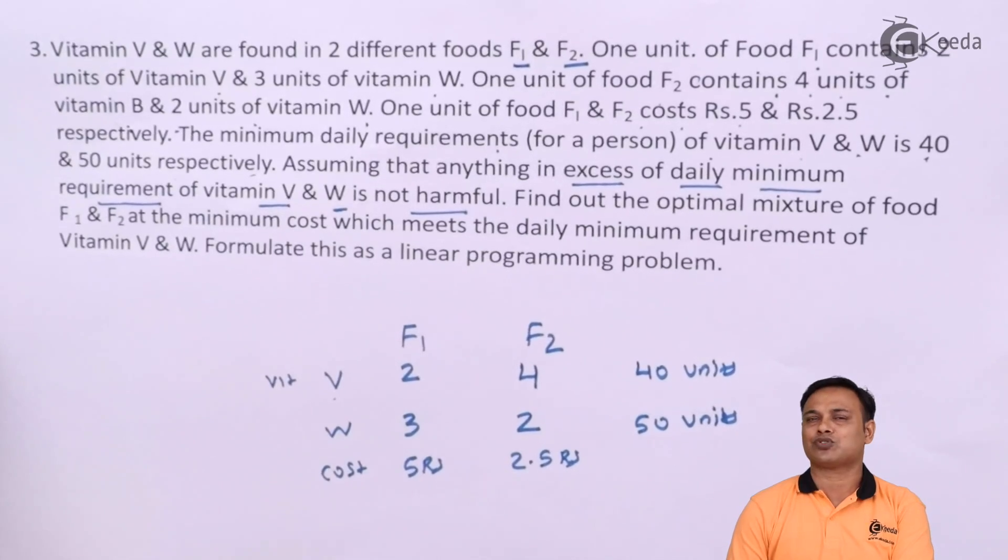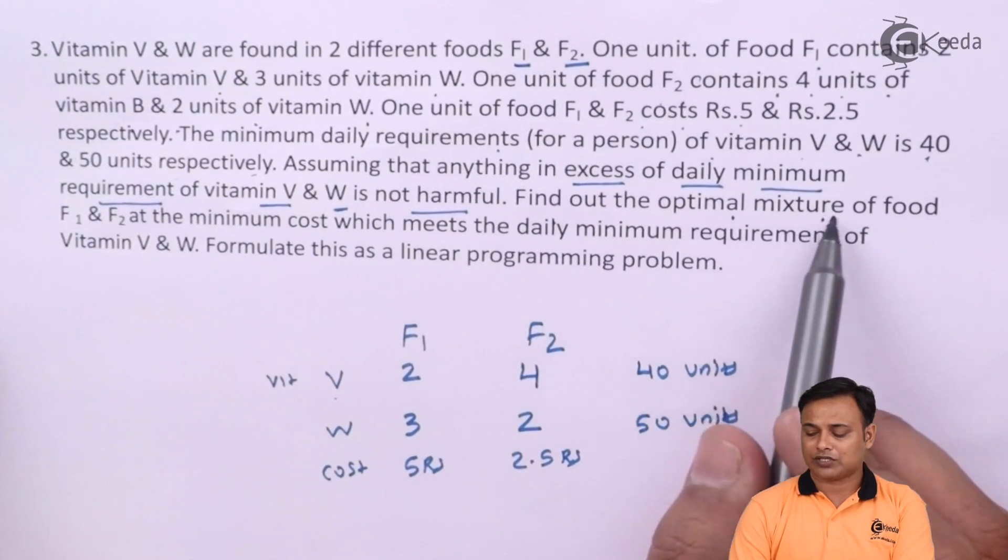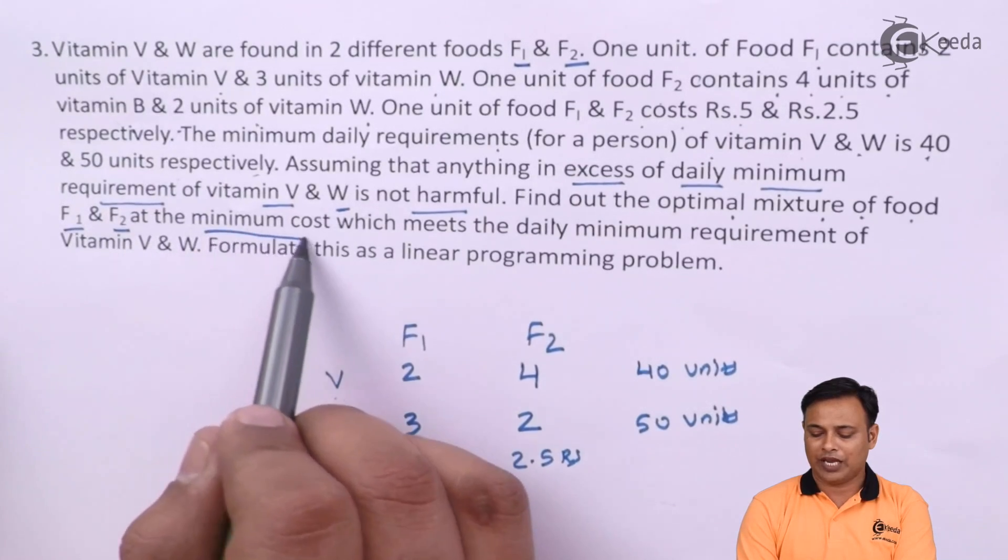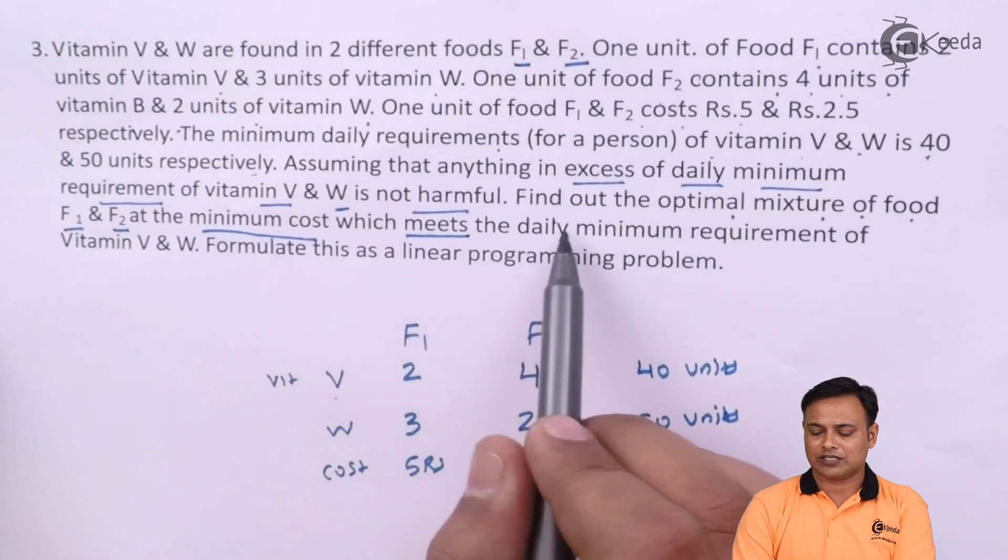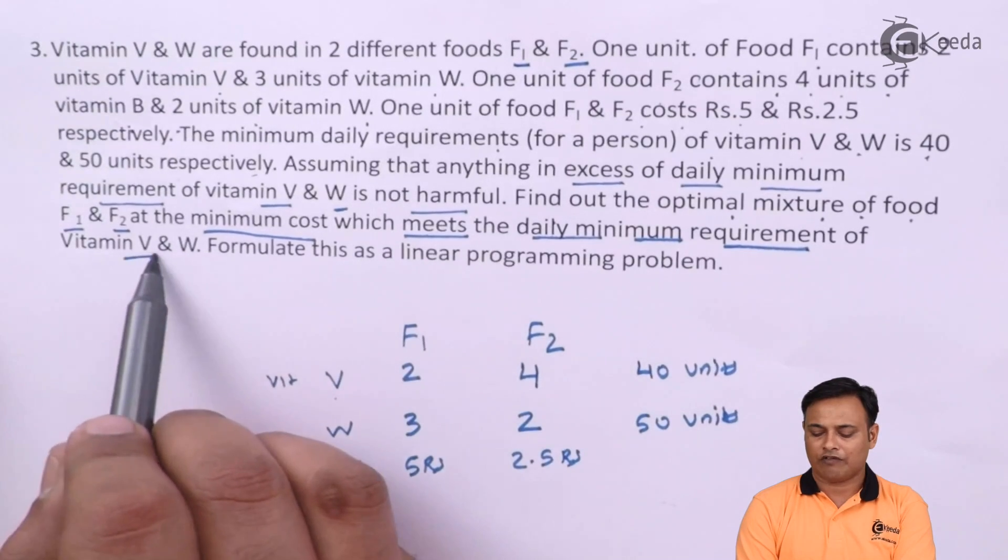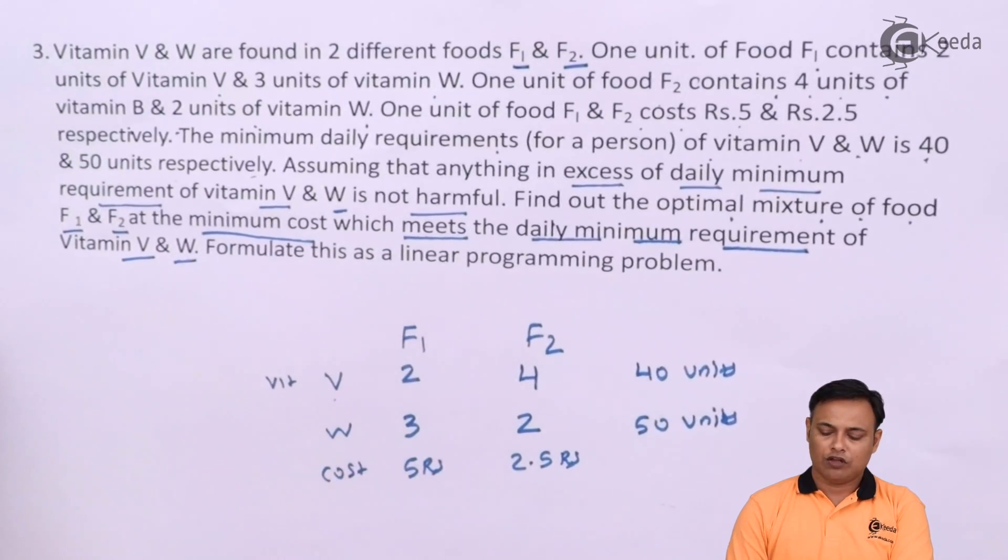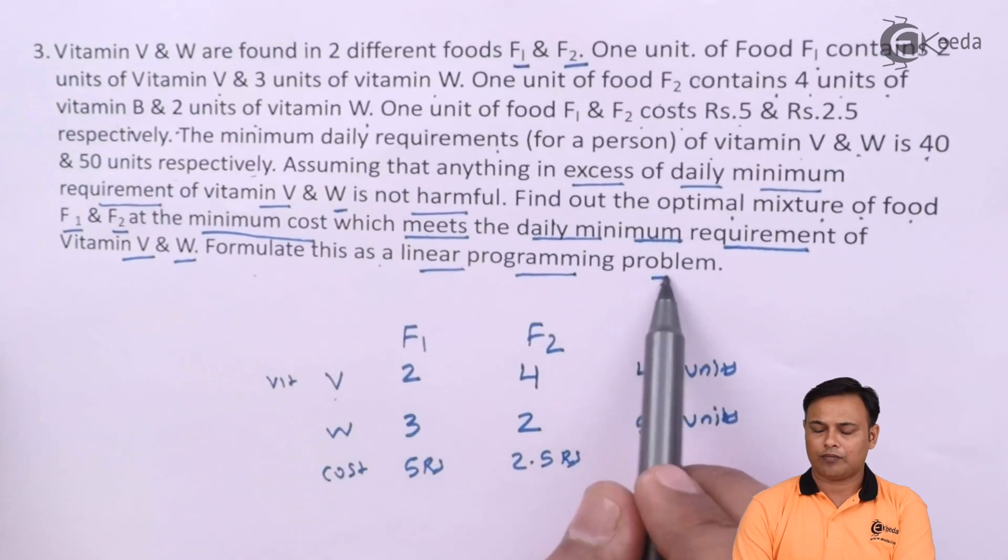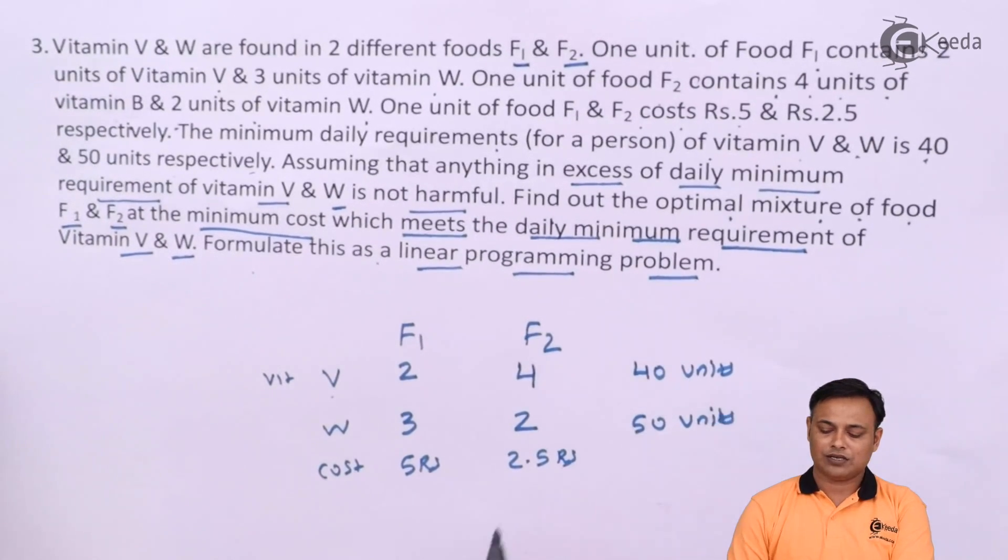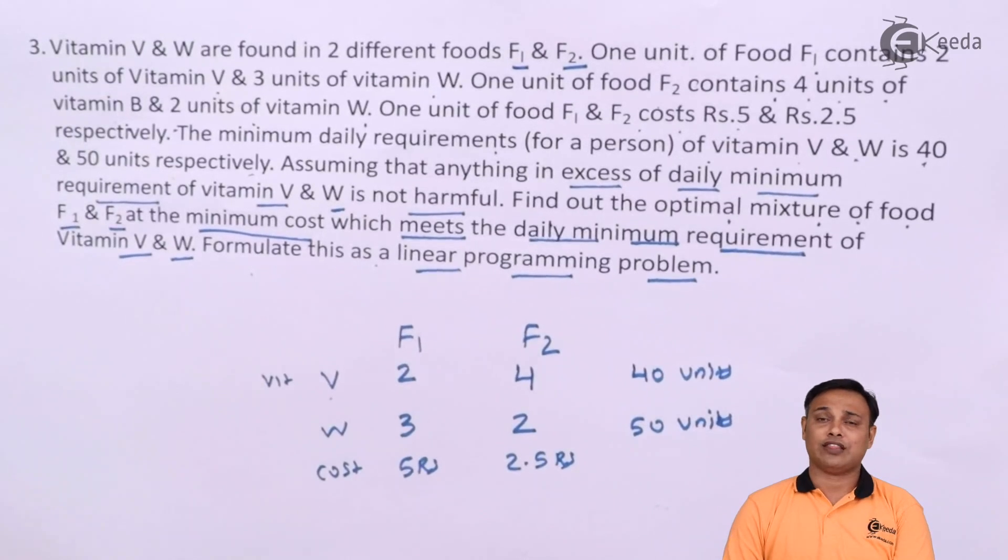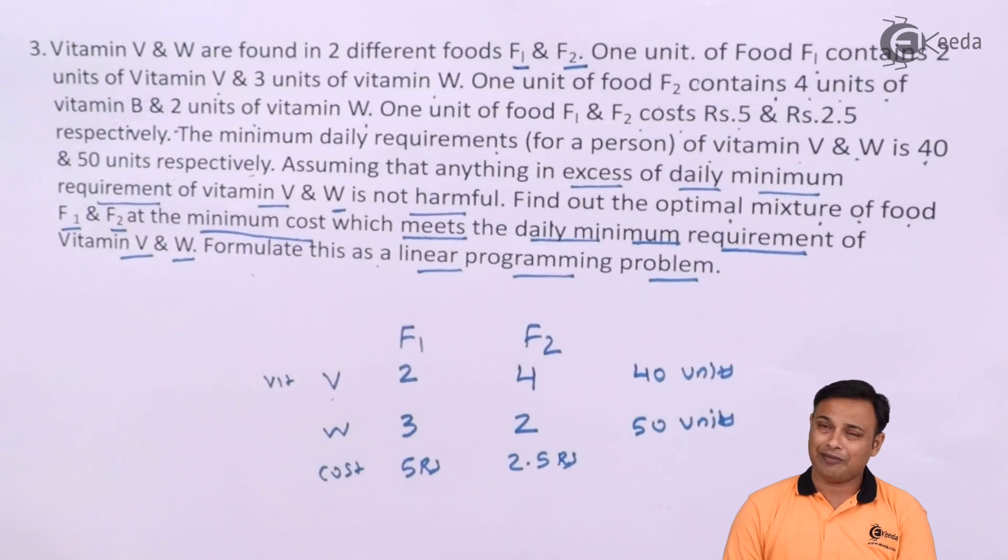What we are supposed to do now? Find out the optimal mixture of food F1 and F2 at the minimum cost which meets the daily minimum requirement of Vitamin V and W. Formulate this as a linear programming problem. We are given the cost of the food F1 and F2 and therefore, we have to minimize the cost.